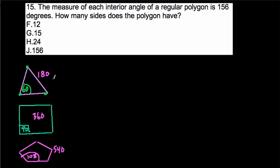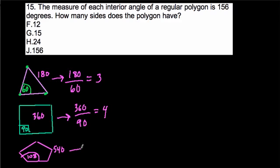So, notice right away. In the triangle, we take 180. If we divide it by 60, what happens? Well, we get 3, the number of sides. Here, if we take 360 and we divide it by 90, what do we get? We get 4, the number of sides. Here, we take 540 and we divide it by 108. What do we get? We get 5, the number of sides.